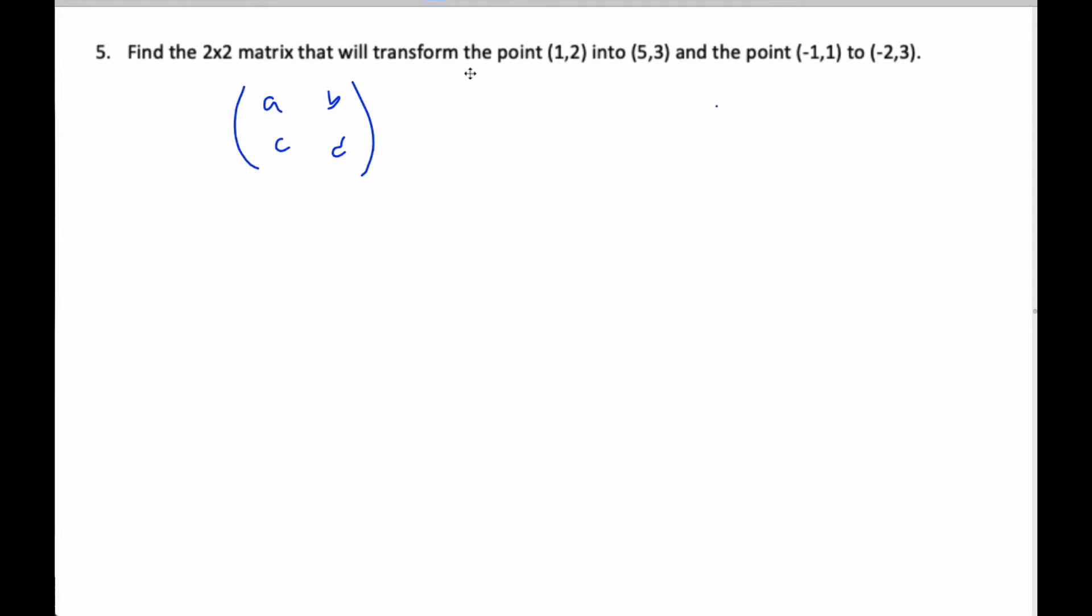And when I multiply this matrix times (1, 2), I end up with the point (5, 3). But when I also take the same matrix A, B, C, D and multiply it by (-1, 1), I also get the point (-2, 3).